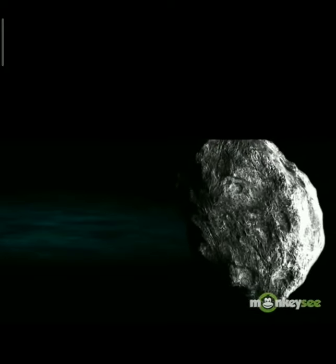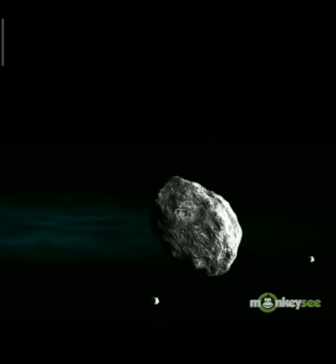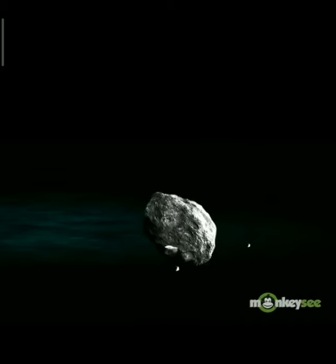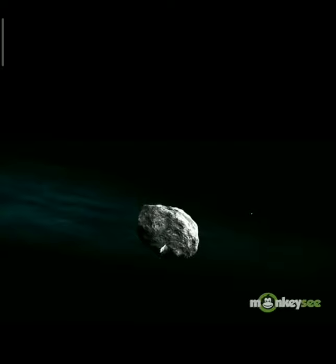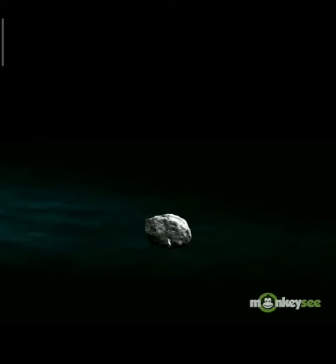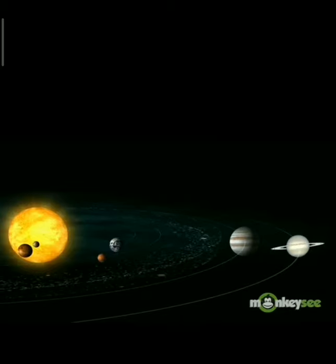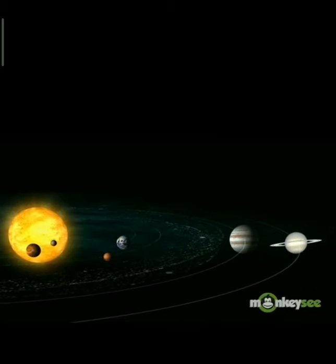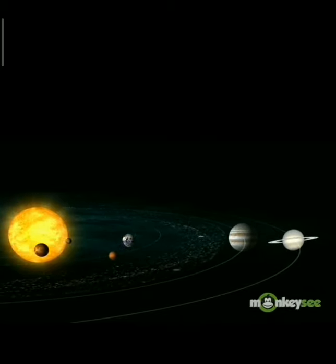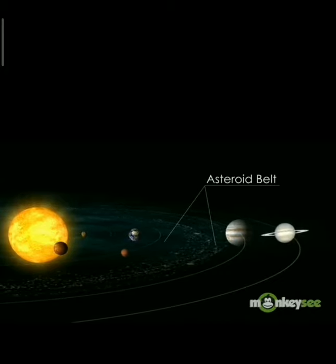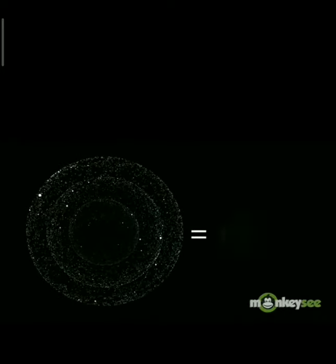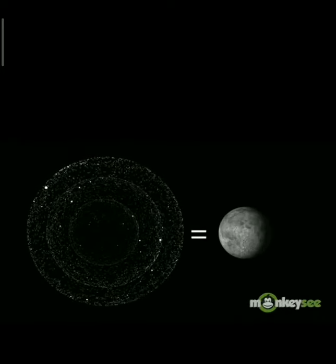Asteroids: small rocky celestial bodies revolving around the sun are called asteroids. Most of them are located between the orbit of Mars and Jupiter. The elliptical path followed by a celestial body around the sun is called an orbit.